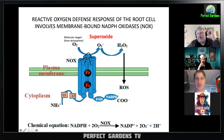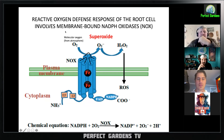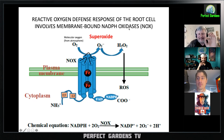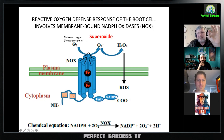This is the enzyme in the plasma membrane of plant cells that produces superoxide. It's called NADPH oxidase — nicotinamide adenine dinucleotide phosphate oxidase. That's the enzyme that produces superoxide. What it does is take oxygen from the air and make superoxide.